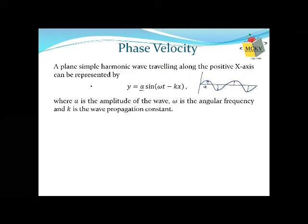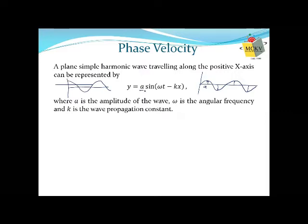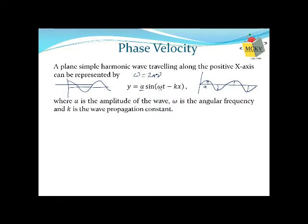Instead of a sine wave, it can be a cosine wave also. The difference is that a cosine wave starts from maximum value to zero, because at angle zero the cosine value is maximum (that is 1), whereas a sine wave starts from zero. This is your amplitude 'a'. Next, omega is called angular frequency, related to normal frequency nu by 2π nu. Nu — the normal frequency — is the number of waves passing a particular position per second.